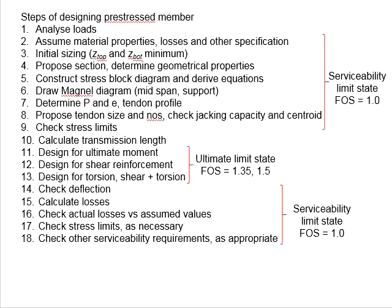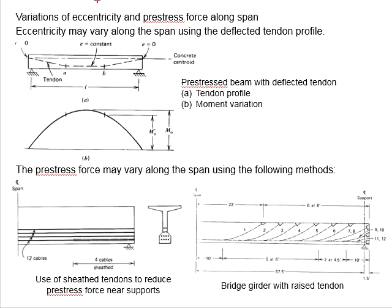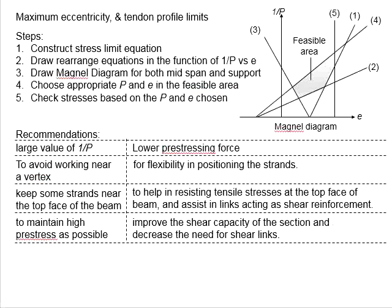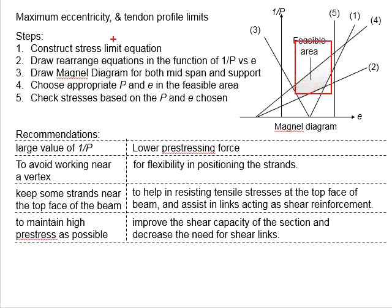Now let us talk about how we adjust P and e as well as the tendon profile in pre-stressed concrete design. The eccentricity and pre-stressing force may be varied along the span — they do not necessarily need to be constant throughout. When you draw the two magnet diagrams, one for the midspan and one for the support, there may be no common visible area for both.